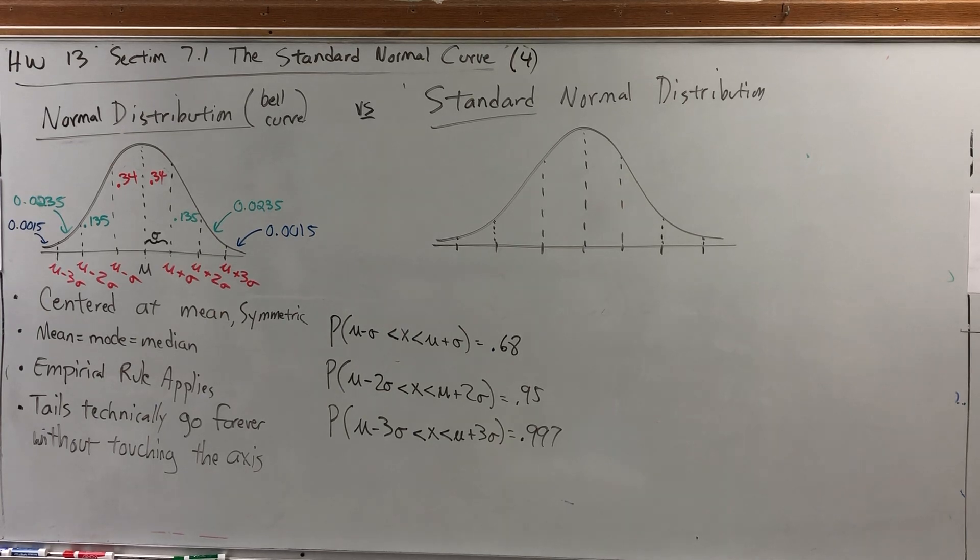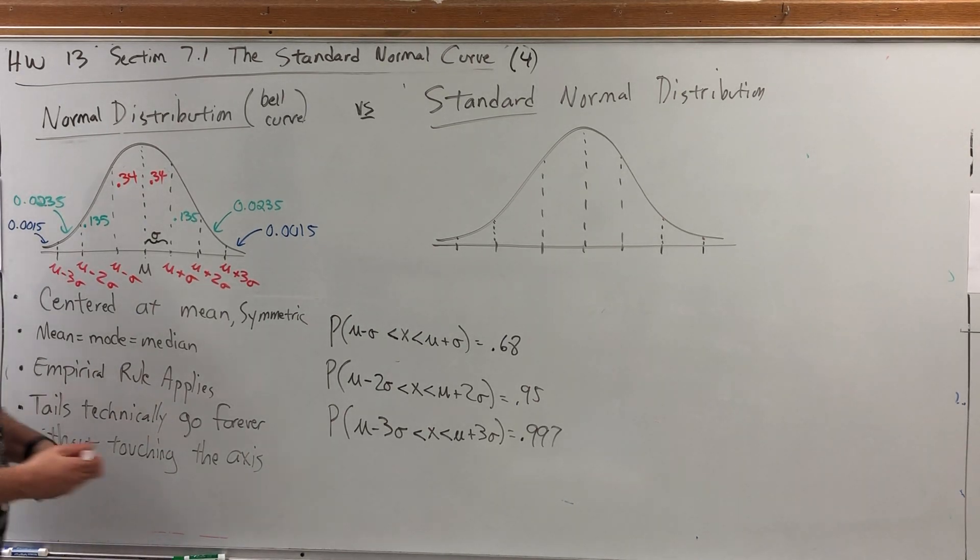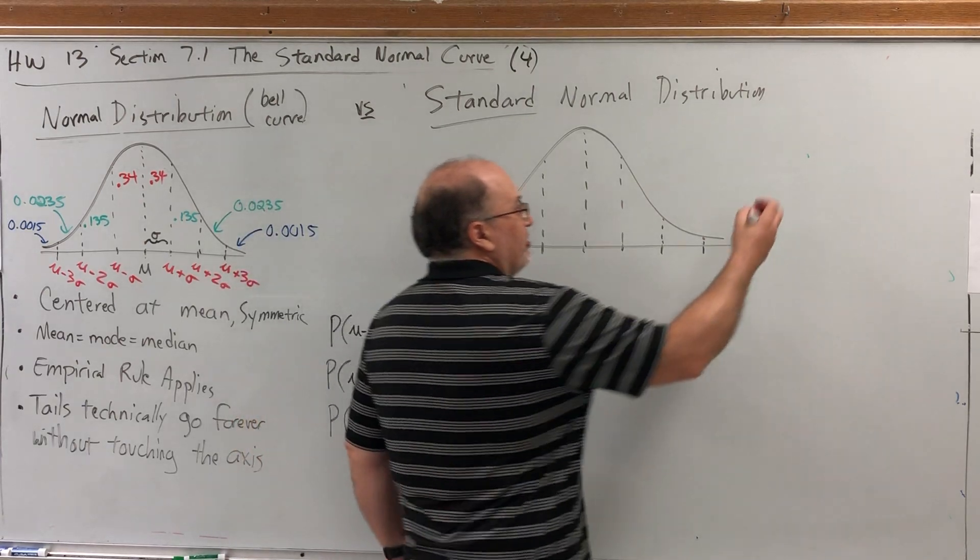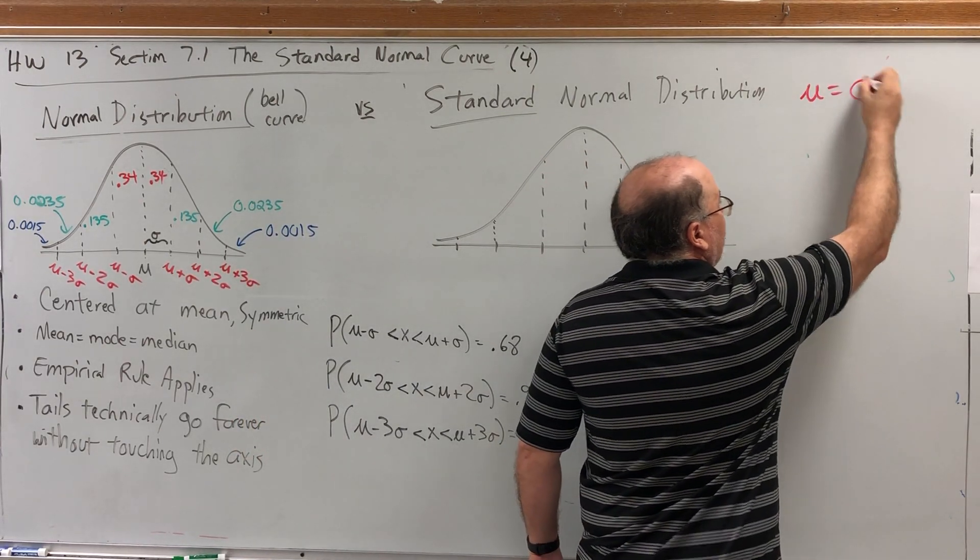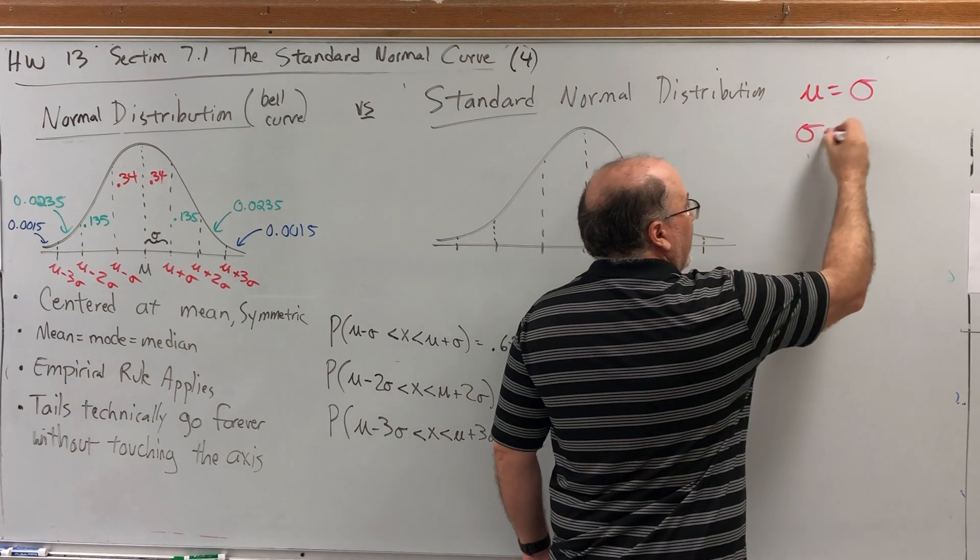But what's a standard normal distribution? A standard normal distribution is a bell curve with a very specific mean and a very specific standard deviation. In a standard normal distribution, and this is part of its definition, the mean is 0 and the standard deviation is 1.